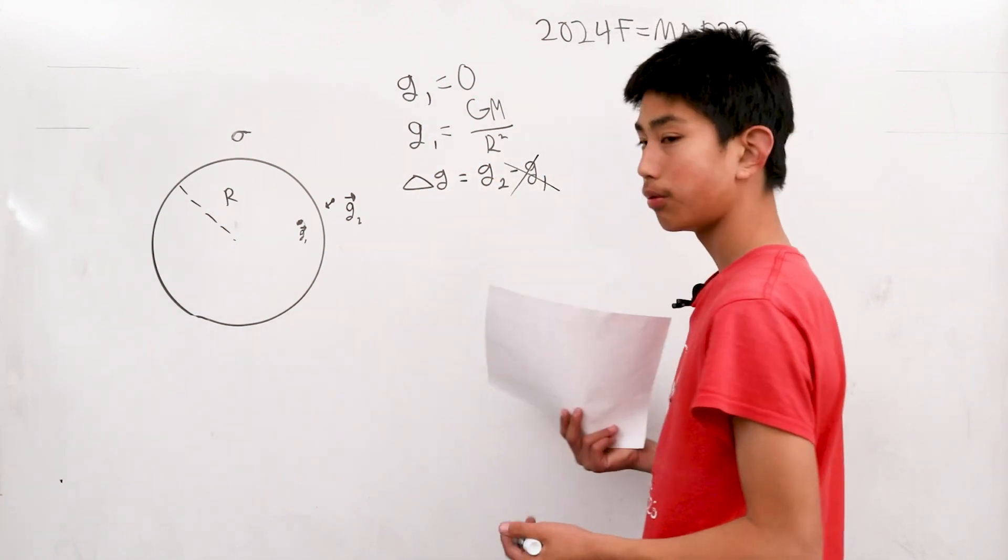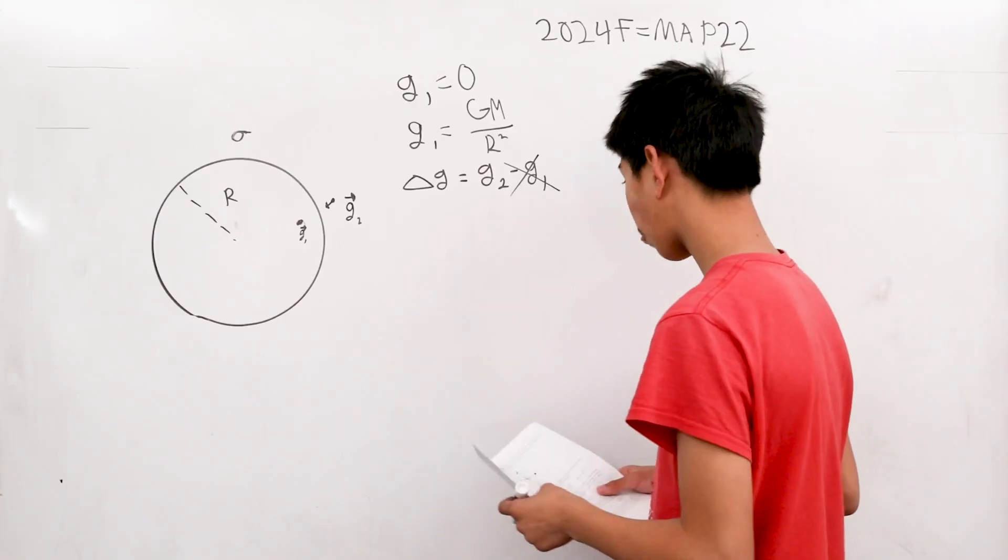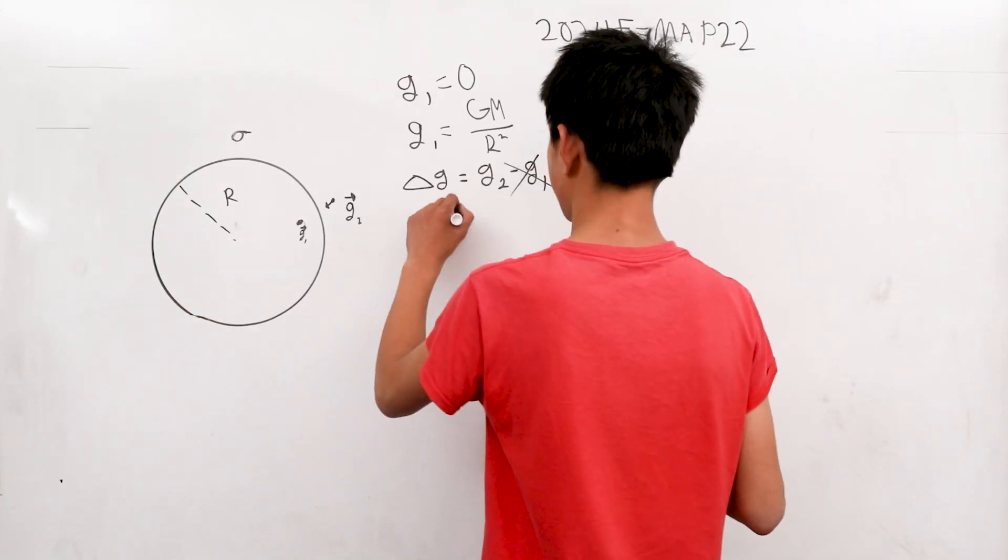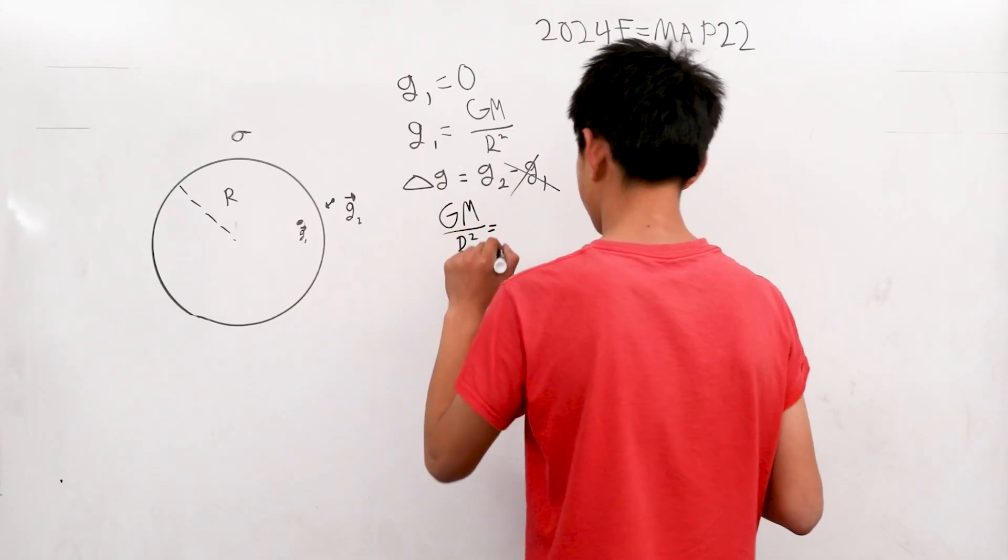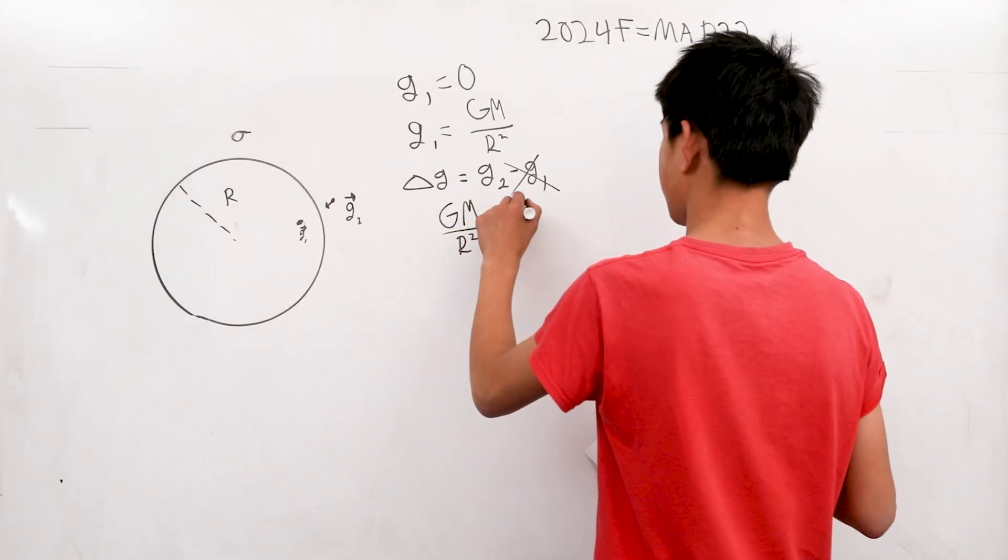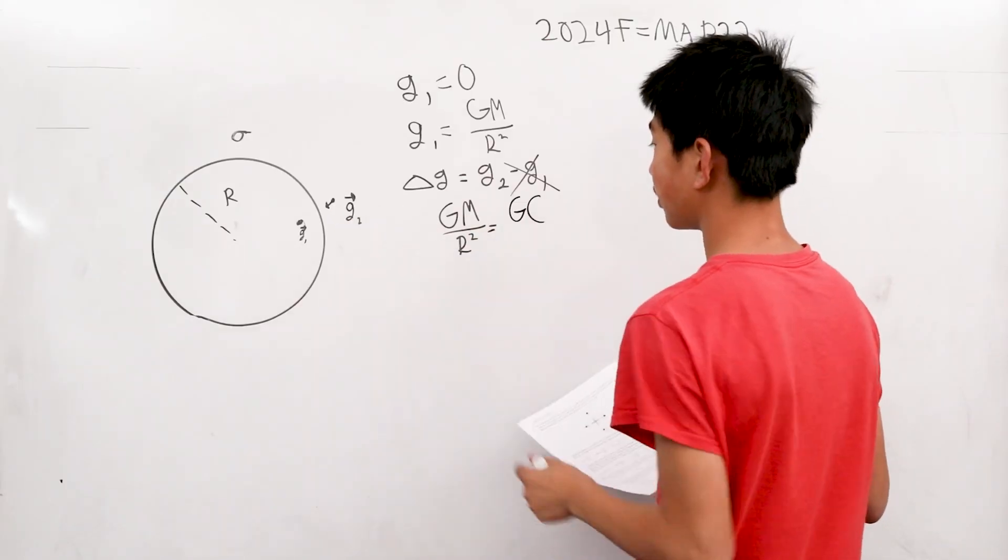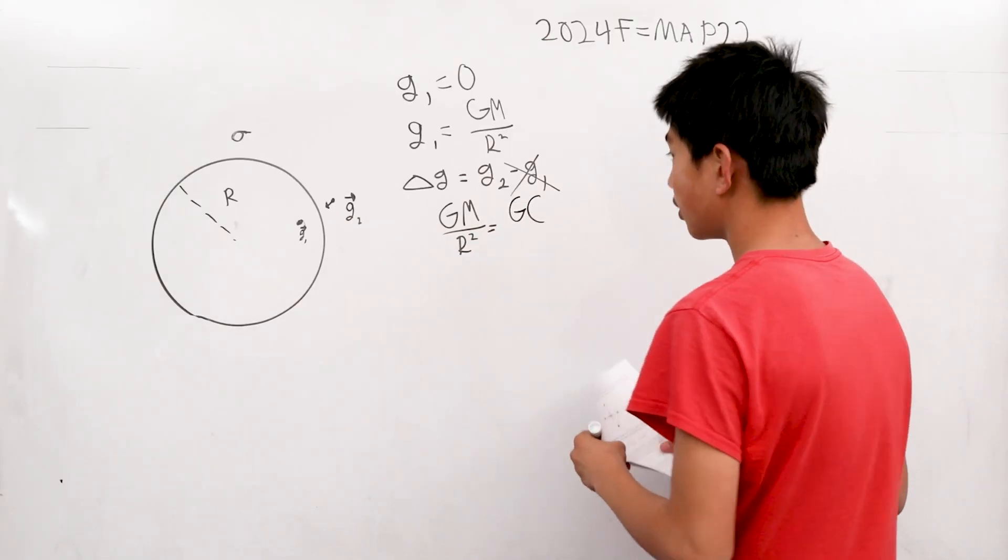Now, G of 2, well, what is that equal to? That's just Gm over R squared. And this can be simplified to G outside and this M, that's just the sphere.